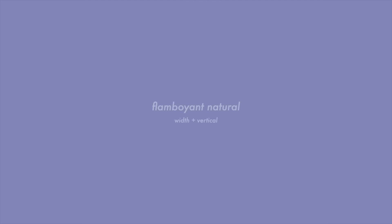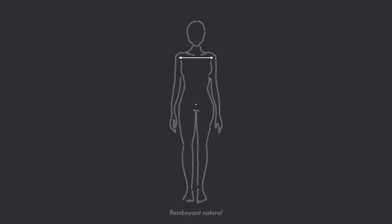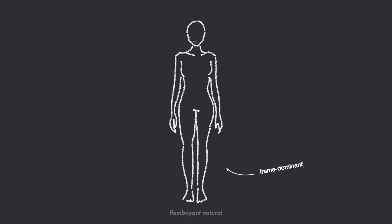Flamboyant Natural: width and vertical. If you have the flamboyant natural body type, then your dominant features are width and vertical. Width is perceived breadth or openness of the shoulder line or clavicle in proportion to the overall bone structure and silhouette. Often width is evident when the shoulders are significantly wider than the hips. The flamboyant natural is frame dominant and bluntly angular, creating a strong and sporty appearance. She may appear slightly curvy or have a defined waistline, but her shoulders and hips are softly squared rather than rounded. A trapezoidal hip shape is quite common in the natural family. Her facial features are slightly wide and elongated, often with high cheekbones.